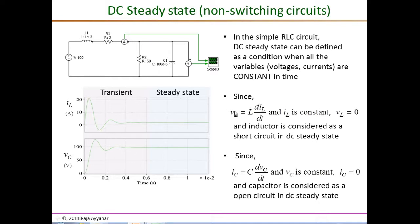In steady state we can also characterize the behavior of inductors and capacitors. Since V_L equals L·dI/dt and I_L is constant in DC steady state, dI/dt equals zero, so V_L equals zero — meaning the inductor behaves like a short circuit. Similarly, since I_C equals C·dV/dt and V_C is constant, I_C equals zero — meaning the capacitor behaves like an open circuit.